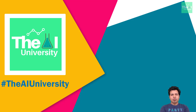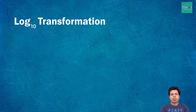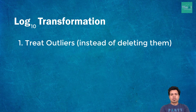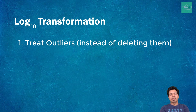In this video, I'm going to explain log base 10 transformation to cater to two objectives. I will be calling log base 10 as 'log10' in the remainder of the video. The first objective of the log10 transformation is to treat outliers by doing this transformation instead of just deleting them, because sometimes outliers can be novel and helpful — good data rather than damaging.